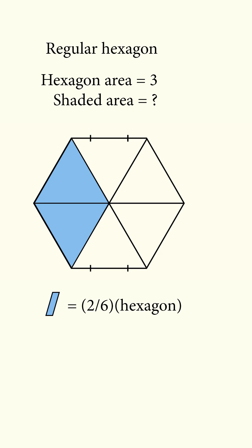So in total, the shaded area is two of the equilateral triangles out of a total of six. So the shaded area is one-third of the hexagon's area, which is equal to 1.